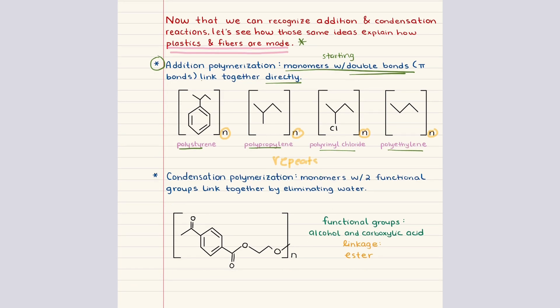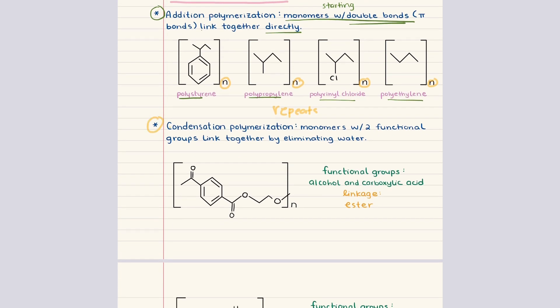The second major pathway is condensation polymerization. While addition polymerization depends on the reactivity of a double bond, condensation polymerization depends on the presence of two functional groups that can react with each other at opposite ends of a molecule. When these groups react, they form a linkage and release a small molecule, usually water.